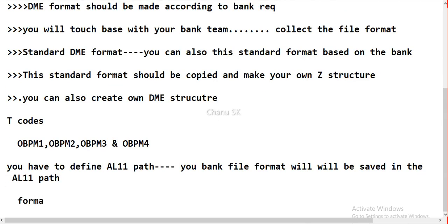There are two types of formats in DME: XML format and flat file format. Some banks will use XML format and some will use flat file formats. This is a very important area during configuration. First, you need to collect information from your bank — including which payment method and what kind of bank setup you need, whether it is for house bank, city, payment method, or SEPA payments. Collect whether the format is XML or flat file.